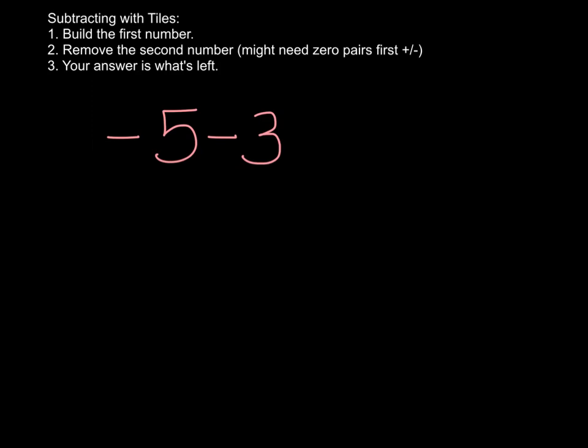So here we have negative 5, and we're taking away 3. So I will build my first number. There we go. 5 negatives. And now this says that I'm removing, I'm taking away 3. So those are 3 positives. Again, I don't have anything there to pull from, so I'm going to add some 0 pairs.